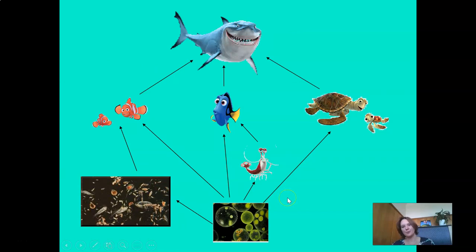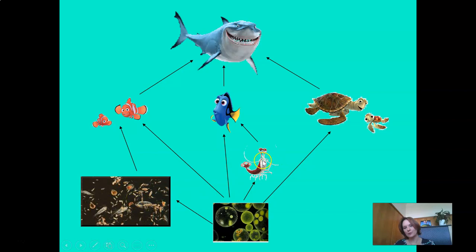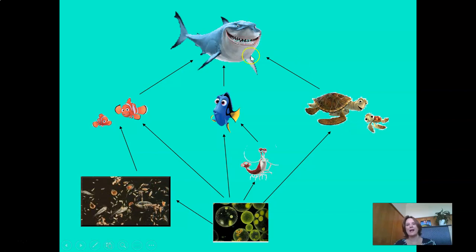Here's a lovely example of a food web — you all know these characters from Finding Nemo. We have algae and zooplankton, small invertebrates which are animals without a backbone, the clownfish Nemo, Dory the blue regal, a turtle, and the shark. Let's take a look at this food web in a more scientific manner.